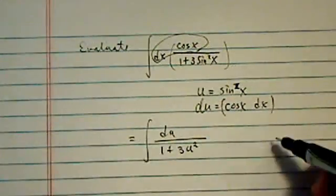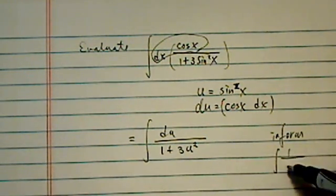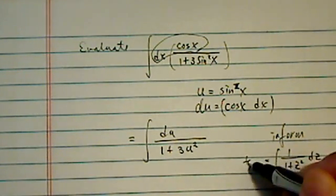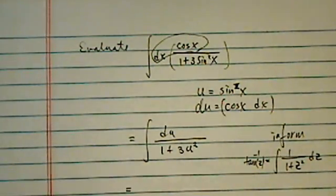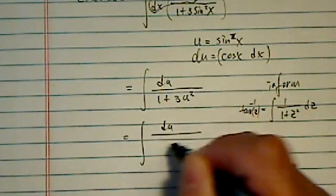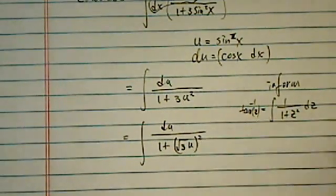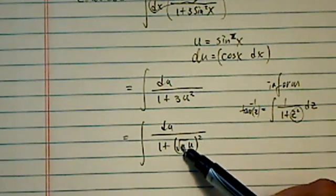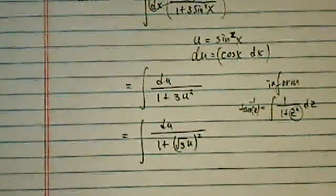Now this one is in the form of 1 over 1 plus z squared dz, which is equal to tangent inverse of z. Now the thing we do have to trick the system a little bit is this: 1 plus radical 3 of u, the whole thing squared, because this requires 1 plus something squared. So we're going to squeeze our 3 back into the radical 3.